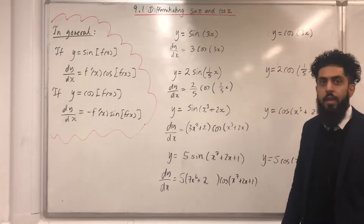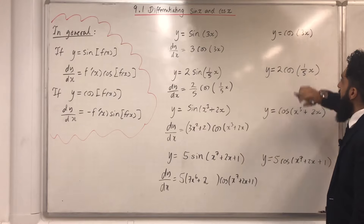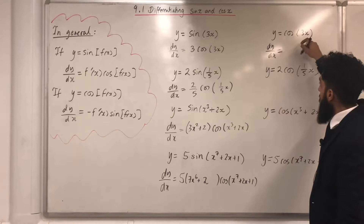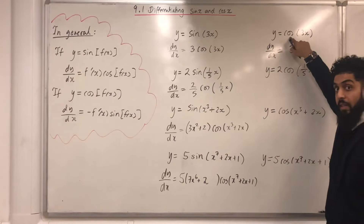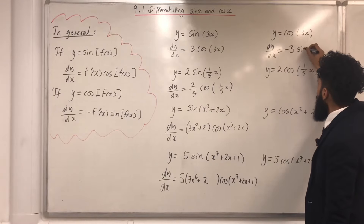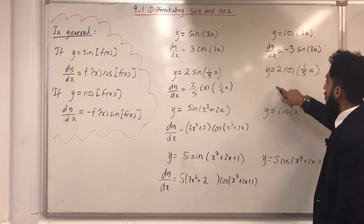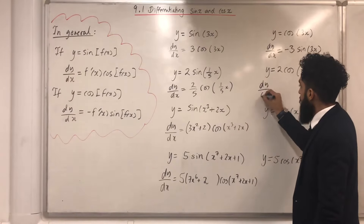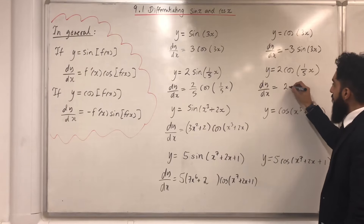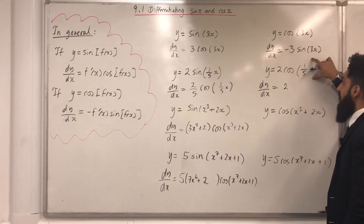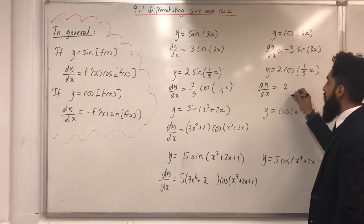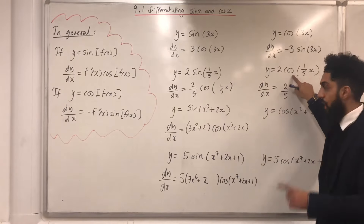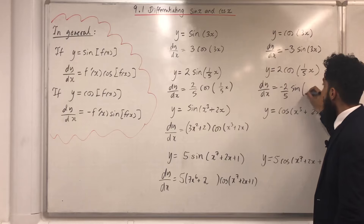For y equals Cos 3x: differentiating 3x gives 3, and Cos differentiates to minus Sine, so dy/dx equals minus 3 Sine 3x. For y equals 2 Cos of a fifth x: differentiating a fifth x gives one fifth, times 2 gives 2 over 5, and Cos differentiates to minus Sine, so dy/dx equals minus two fifths Sine of a fifth x.